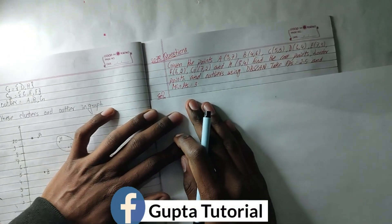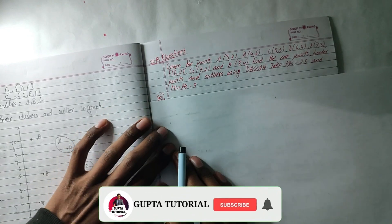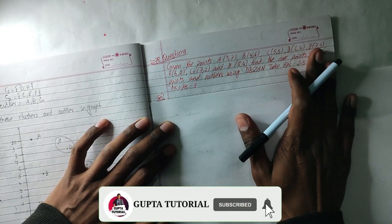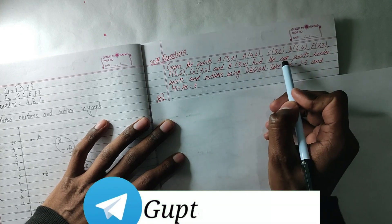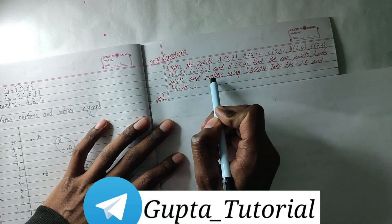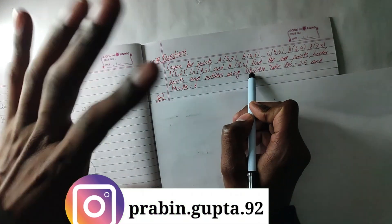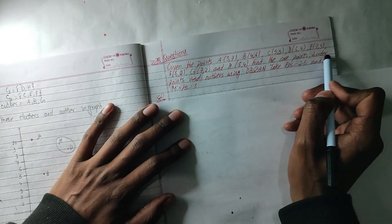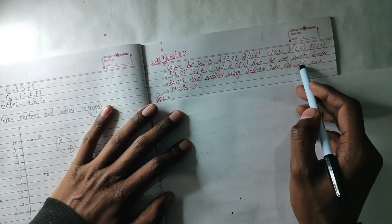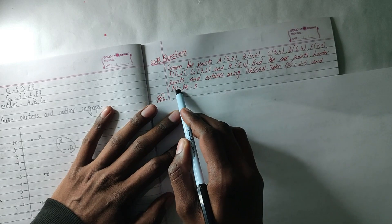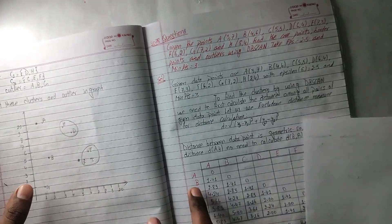Hey guys, welcome back to my channel. Now we are going to make a DBSCAN of a math question solution. We are going to ask a question, we are going to give some points — which are border or outlier? We are going to make this diagram. We are going to give EPS value 2.5 and MinPTS. So we will also give some solutions, but how can we do this?